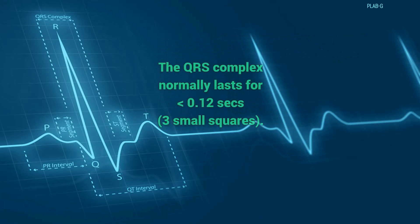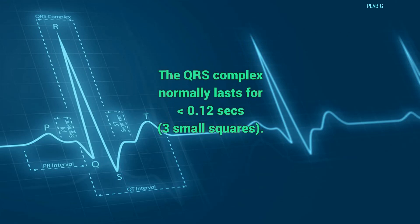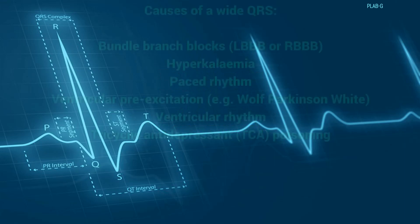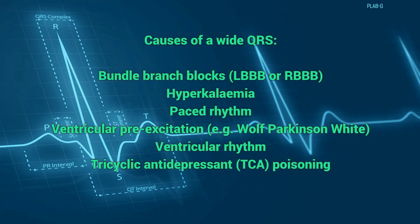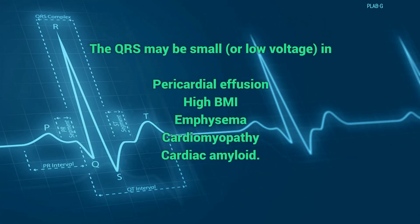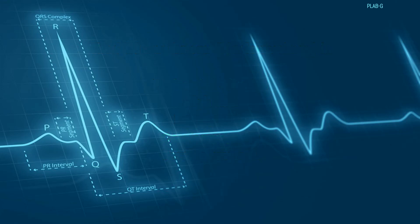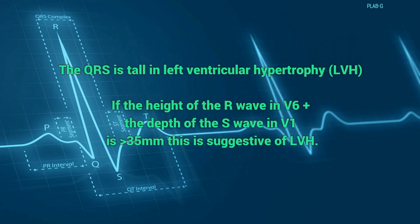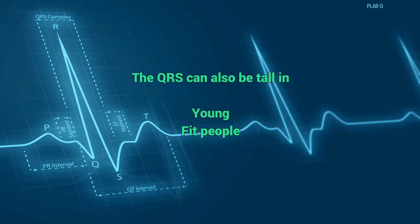When we assess the QRS complex, we have to look at the width. The QRS complex normally lasts for less than 0.12 seconds, that is 3 small squares. These are the causes of wide QRS complexes. We also need to look at the shape and height. The QRS complex may be small in pericardial effusion, high BMI, emphysema, cardiomyopathy and amyloidosis. The QRS complex is tall in left ventricular hypertrophy. If the height of the R wave in V6 plus the depth of the S wave in V1 is more than 35 mm, this is suggestive of left ventricular hypertrophy. The QRS complex can also be tall in young and fit people.